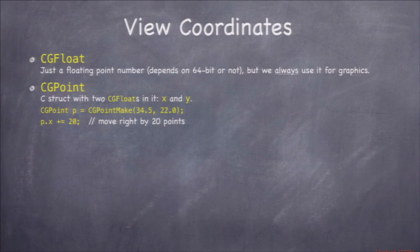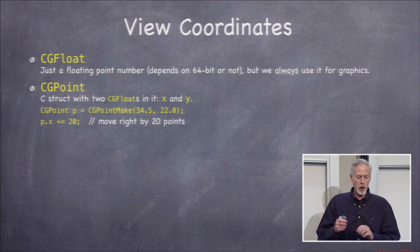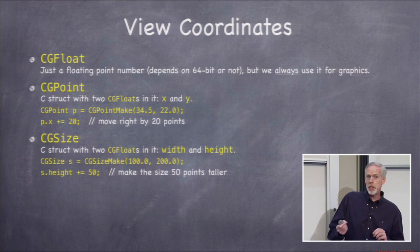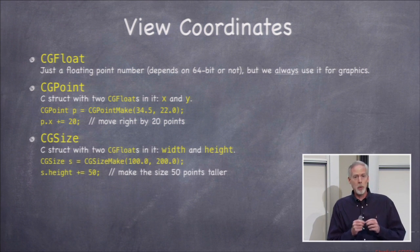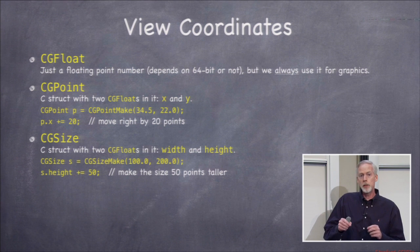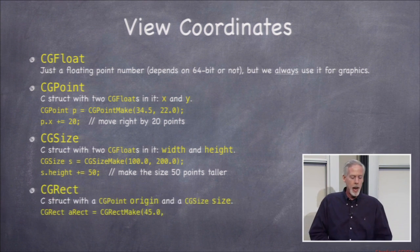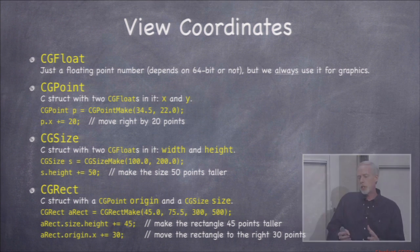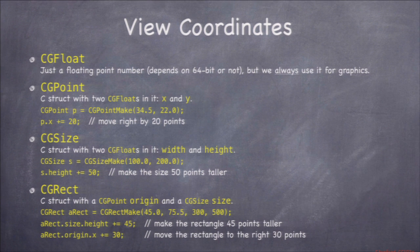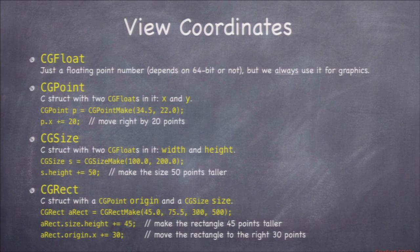There's a C struct called CGPoint with two elements, X and Y — an X and Y position in the drawing world. There's CGSize, which is a struct with width and height (both CGFloats), specifying a width and height. And there's CGRect, a C struct containing CGPoint and CGSize, specifying an origin, width, and height for a rectangle.